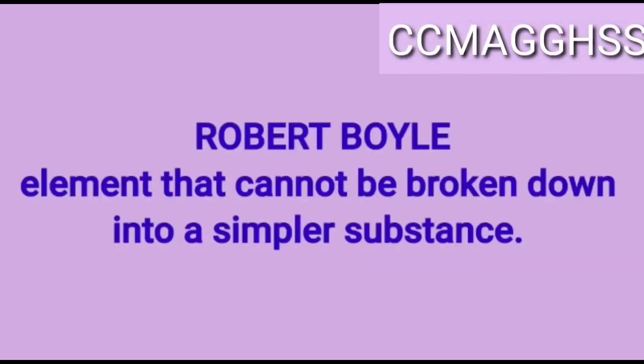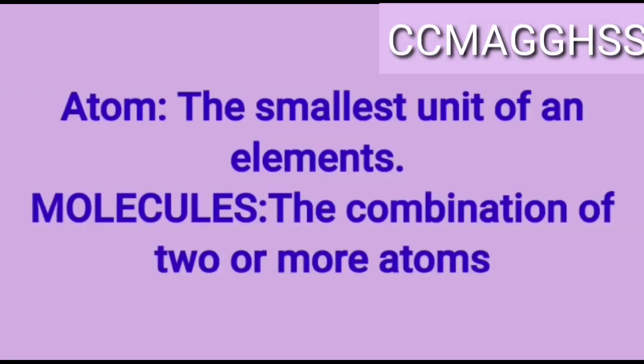Robert Boyle said that an element cannot be broken down into a simpler substance. A simple substance is made up of one kind of atom — each element is made up of only one kind of atom. For example, aluminium is an element made up of only aluminium atoms. The smallest unit of an element is called an atom. A molecule is the combination of two or more atoms.